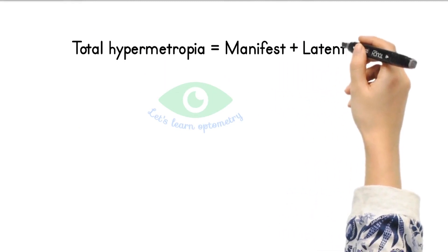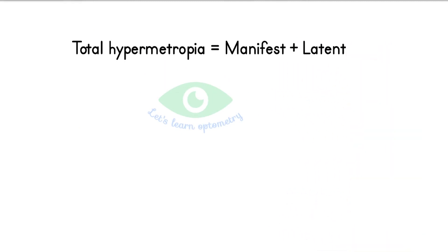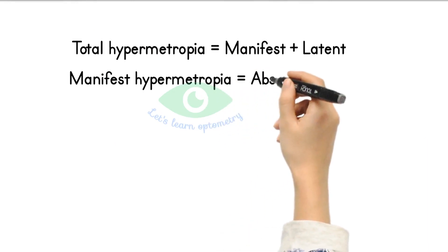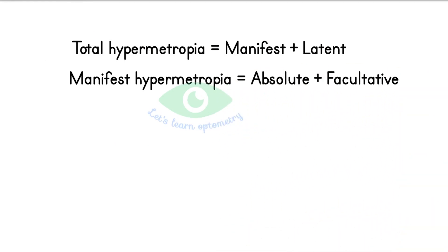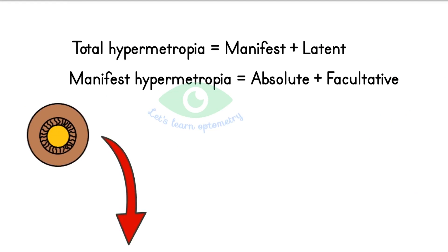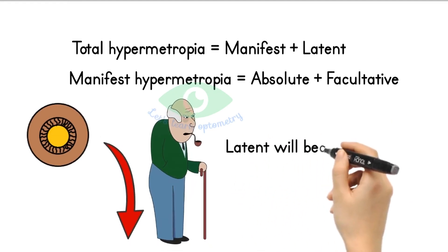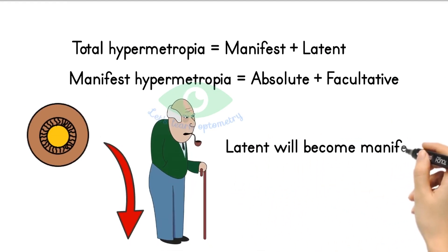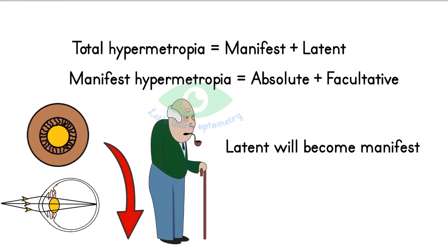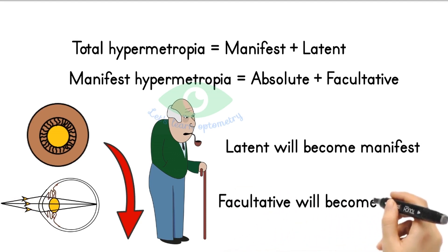Total hypermetropia is the sum of manifest and latent components. Manifest hypermetropia is the sum of absolute and facultative components. As the tone of ciliary muscles decreases with age, latent hypermetropia becomes manifest. Similarly, as the range of accommodation reduces with age, facultative hypermetropia becomes absolute.